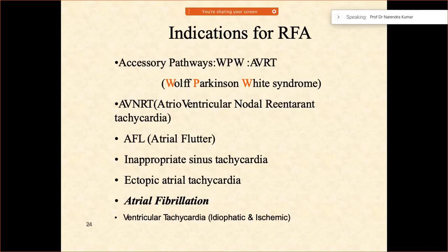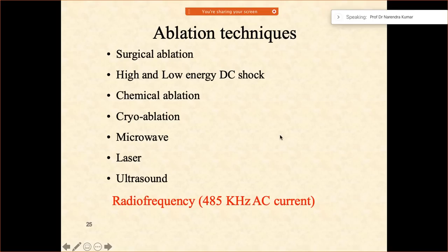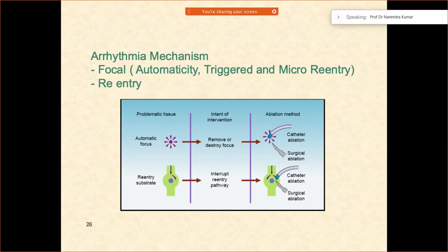Why do we ablate? There are indications. Indications include a patient having tachycardia — like atrioventricular re-entry tachycardia, nodal re-entry tachycardia, flutter, inappropriate sinus tachycardia, ectopic atrial tachycardia, atrial fibrillation, or ventricular tachycardia. Regarding the techniques, there are different options: chemical ablation, DC shock, cryoablation, microwave, laser, or ultrasound. Regarding the mechanism of arrhythmia, there are different mechanisms — focal (which can be automatic, triggered, or micro re-entry) or a re-entry mechanism.